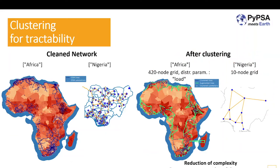One nice feature of PyPSA-Earth is the clustering functionality. On the left-hand side we can see the African continent, using power lines from OpenStreetMap and the Nigerian country as raw data. We then cluster the whole network to reduce the complexity of the model in order to get a feasible solution. PyPSA-Earth has the option to set a specific clustering — you can choose the clustering method or specify how many nodes you want. It's a trade-off between detail and complexity, but with this clustering system we want to achieve an optimum of reducing complexity while preserving a representative system.